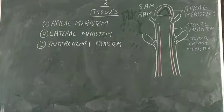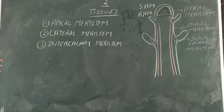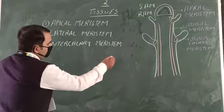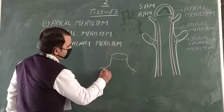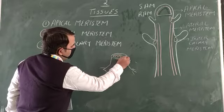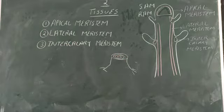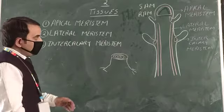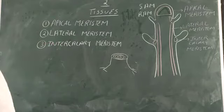The lateral meristem gives the annual rings in the trunk of the tree. Whenever you look at a tree, you can find the annual ring-like structure here. This ring-like structure is added every year, and by counting these rings you can tell the age of the tree. This is formed by the lateral meristematic tissue.